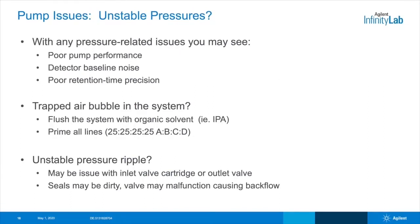What if you do have pressure ripple or pressure fluctuations? It could be caused by any number of issues, and it may result in things like baseline noise, shifts, or affect the retention times. Basically, your solvent composition isn't being delivered consistently. Many times, this is caused by an air bubble trapped in the system. If you suspect an air bubble, it's best to flush the system with an organic solvent. Methanol or acetonitrile may already be on your system and easy to use, but a more viscous solvent like isopropanol can help push out air bubbles that may be stuck.